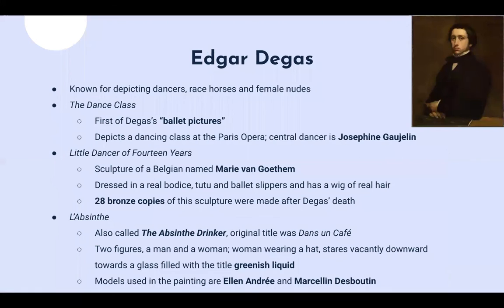Let's move on to Edgar Degas. Edgar Degas was another French artist considered a co-founder of Impressionism, though he's not given the founding role that Monet is. In his paintings, he's known for depicting dancers — which is sort of a main thing about Degas — as well as racehorses and female nudes. One of his major paintings is The Dance Class, the first of his ballet pictures, which depicts a dancing class at the Paris Opera. The dancer in the center is Josephine Gaujelin.